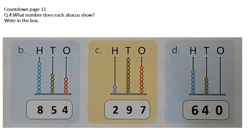Now we will do part D. How many beads in hundreds? 1, 2, 3, 4, 5, 6: write 6. How many beads in tens? 1, 2, 3, 4: 4 beads. And how many beads in ones? There are none — 0 means nothing, so we will not draw any bead. The rest of the parts are your homework.